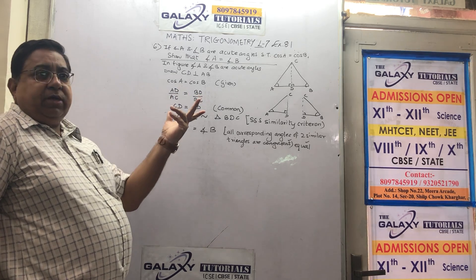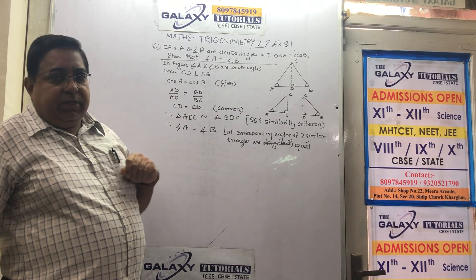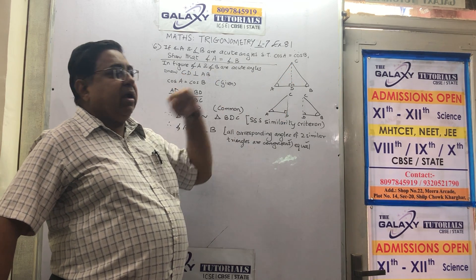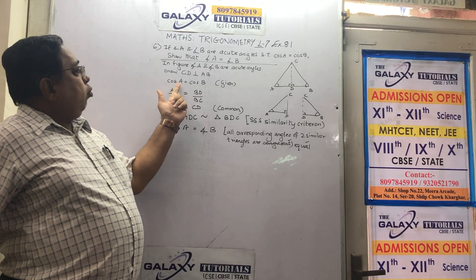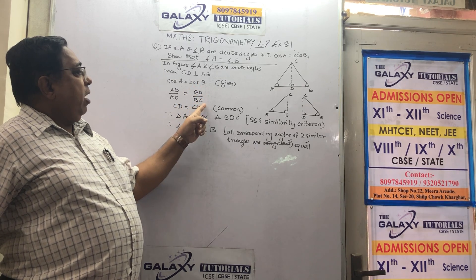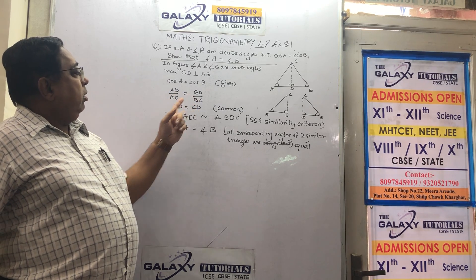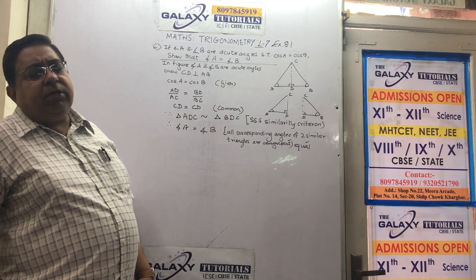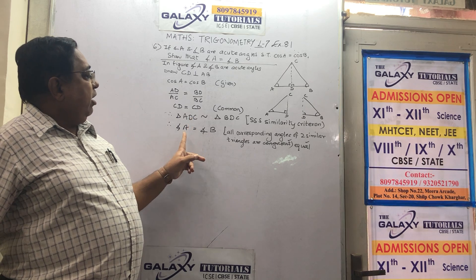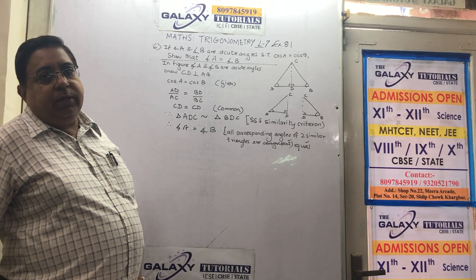Let us see once again — it looked like a big sum but is not even two marks. Angle A and B are acute, less than 90. We drew the diagram and a perpendicular CD so I have right angle triangles on both sides. They told me cos A equals cos B. Cos is adjacent upon hypotenuse — see the triangles separately because angles are different. I also know CD is common, so triangles are similar. Therefore angles are equal. Hence proved.